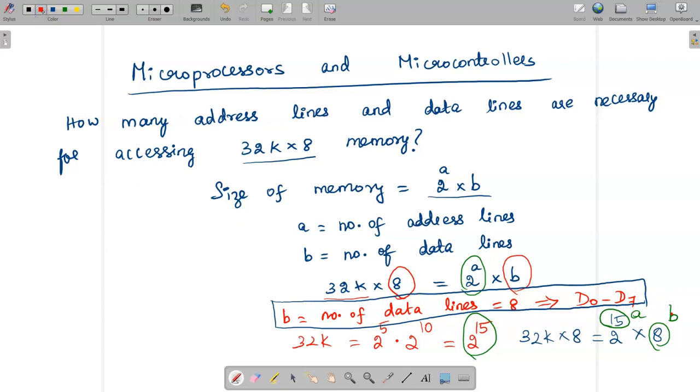Now I need to find what is a. A is the number of address lines. The a value is 15, which I can represent as a0 to a14.